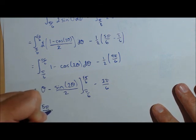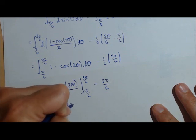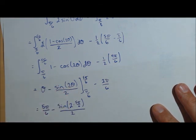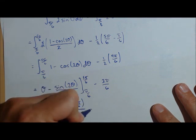Okay, 5 pi over 6 minus sine of 2 times 5 pi over 6 over 2 minus, let's put this in parentheses.